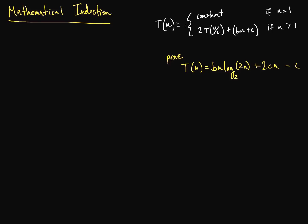So we have T(n) here is constant if n is 1, and T(n) is 2 times T(n/2) plus bn plus c, some linear function, if n is greater than 1. And we want to prove that T(n) is this equation right here.